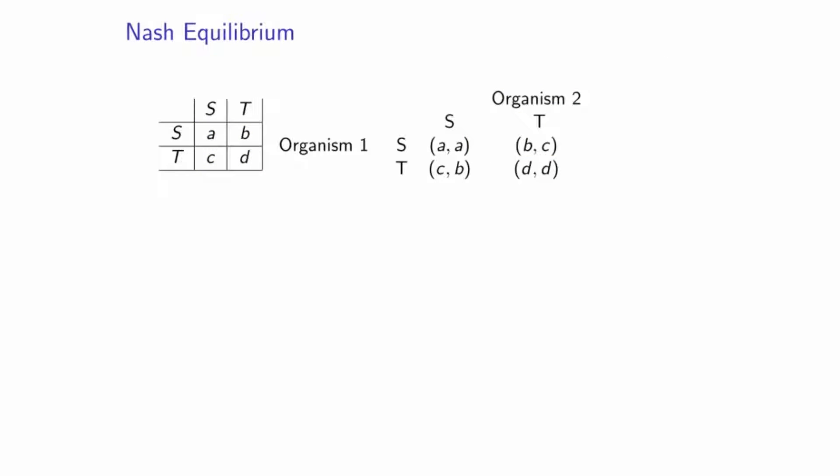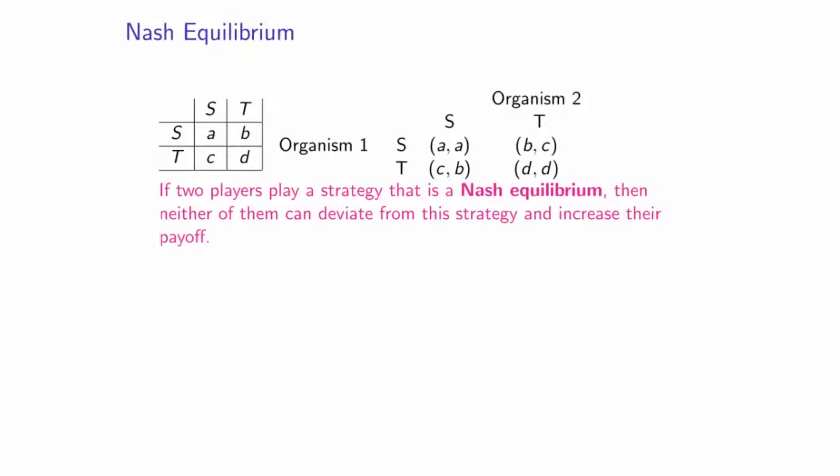I'm going to use this representation of payoffs to introduce some definitions. Here's the first definition of an equilibrium, specifically a Nash Equilibrium, named after John Nash. Two players play a strategy that is a Nash Equilibrium when it is not possible for them to deviate — to move away from this strategy and increase their payoff. In a sense, they are locked in.